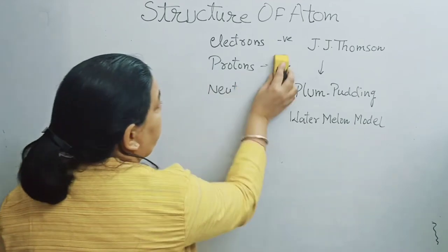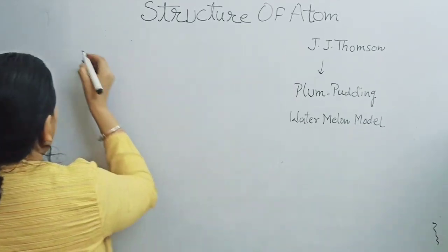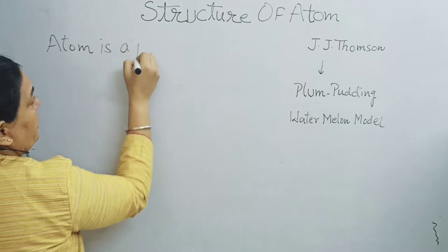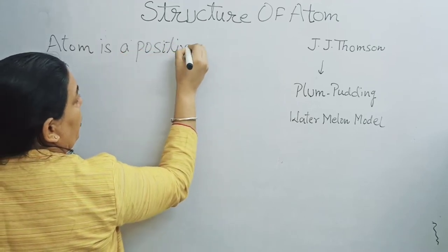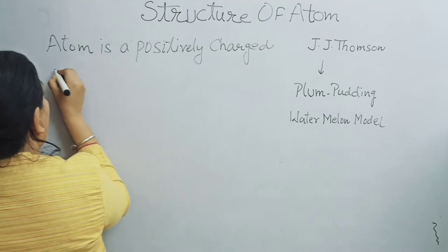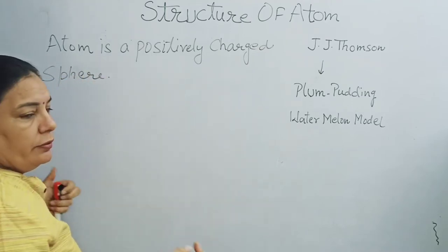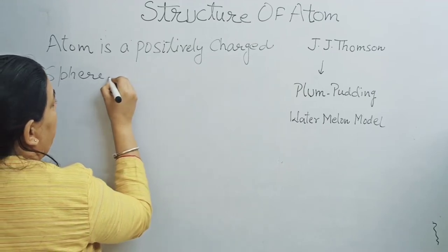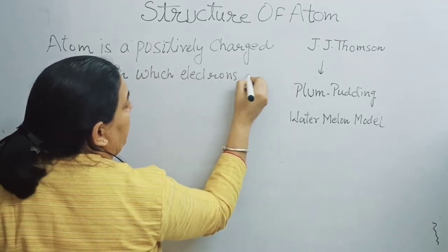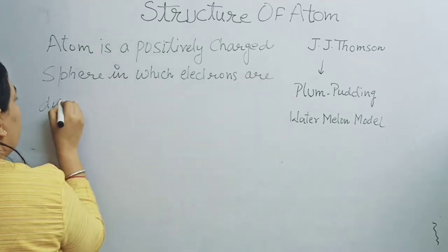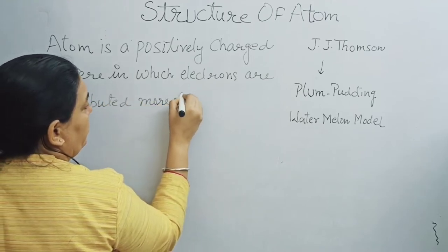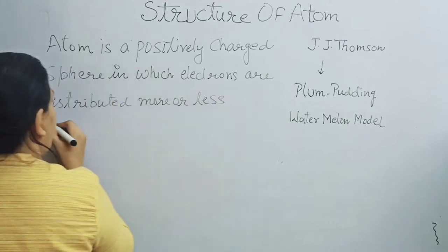According to J.J. Thomson, an atom is a positively charged sphere in which electrons are distributed more or less uniformly. Thomson proposed this model in 1898. This first model of the atom is also known as the plum pudding model or the watermelon model.